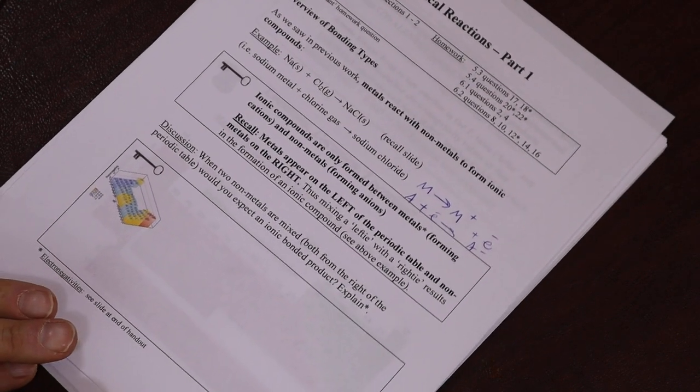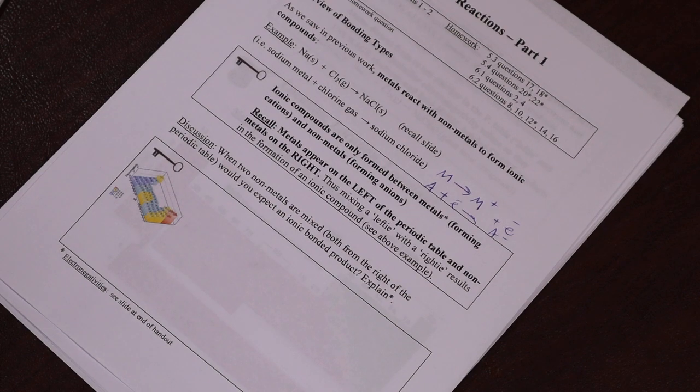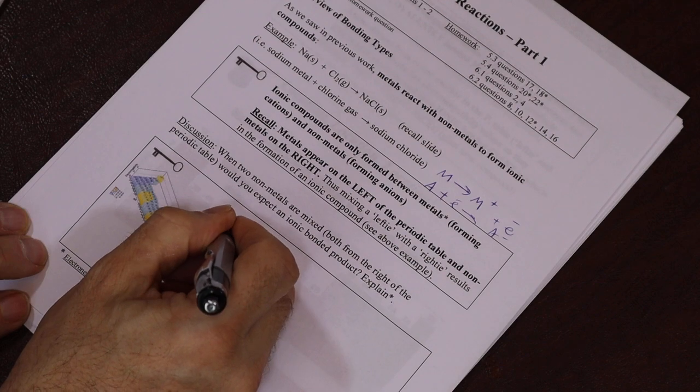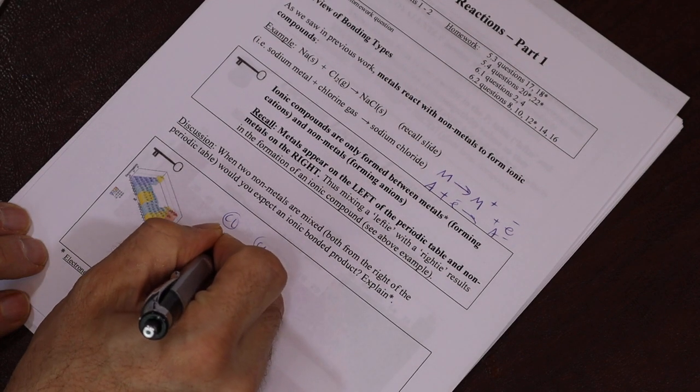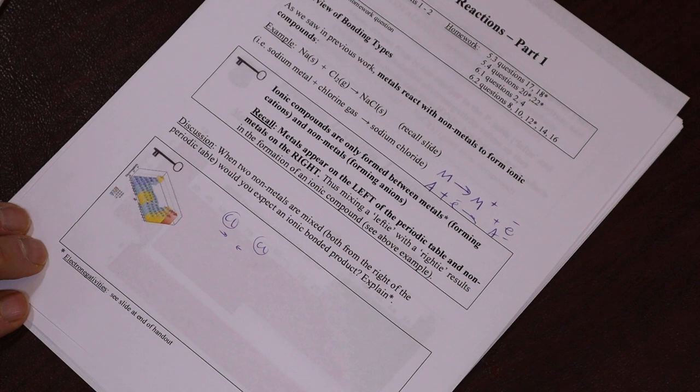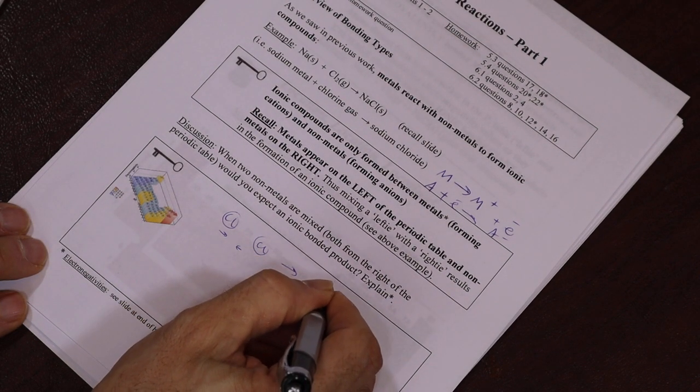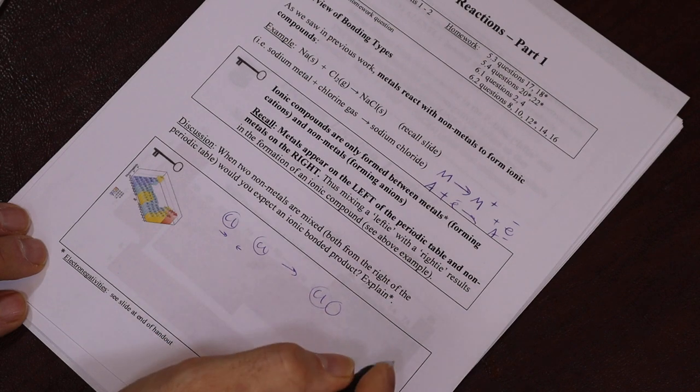In the discussion section here we're going to talk about what would happen when we mix two non-metals. What would you expect? So if I have, for example, a chlorine and a chlorine and I bump them together, what would you expect to happen? Well, they obviously form a compound which is Cl2, but is that an ionic bond?